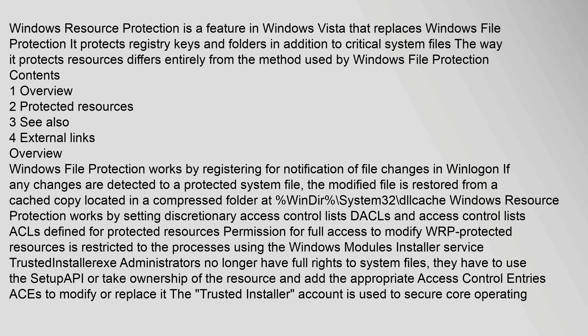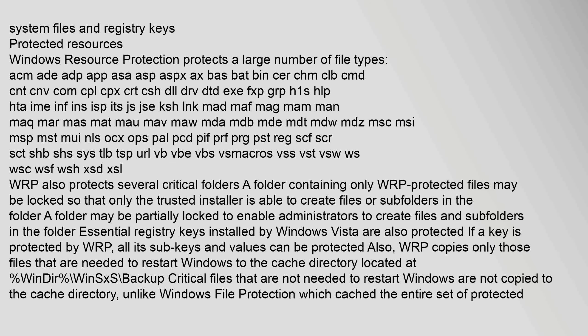Windows Resource Protection works by setting Discretionary Access Control Lists (DACLs) and Access Control Lists (ACLs) defined for protected resources. Permission for full access to modify WRP-protected resources is restricted to processes using the Windows Modules Installer service (TrustedInstaller). Administrators no longer have full rights to system files; they have to use the setup copy or take ownership of the resource and add the appropriate Access Control Entries (ACEs) to modify or replace it. The TrustedInstaller account is used to secure core operating system files and registry keys.